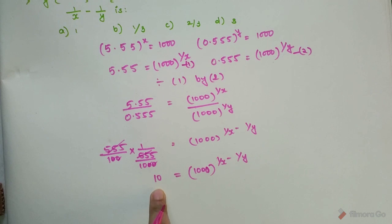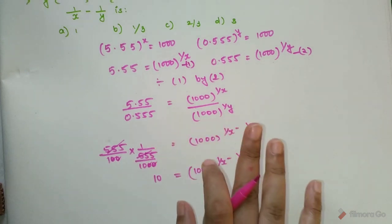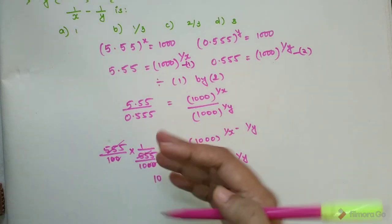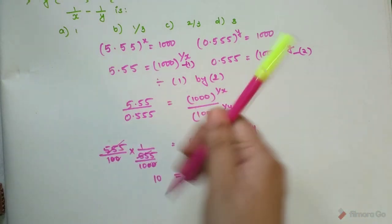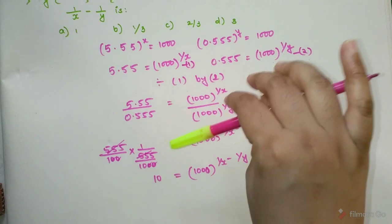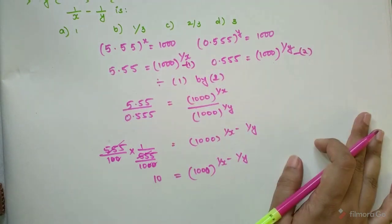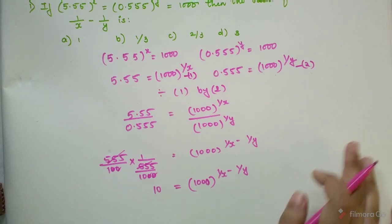Now the problem is that this is 10 and this is 1000. If at all any of you did not understand how did this 10 come in the numerator, then I have actually made a video on understanding the division in decimals. The link of which will be available in the description as well as on top also somewhere. Please go ahead and check that out after you finish watching this video.